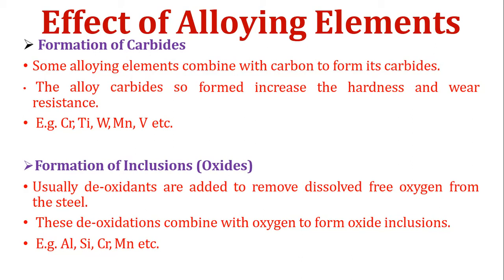Second effect: formation of inclusions or oxides. Usually deoxidizers are added to remove dissolved free oxygen from the steel. During steel manufacturing, some oxygen gets trapped inside the steel. That oxygen is generally removed by addition of small amounts of alloying elements such as aluminum, silicon, chromium, magnesium, etc. For example, adding aluminum forms aluminum oxide, and adding chromium forms chromium oxide. That is the second effect — formation of inclusions or oxides.